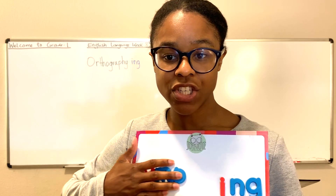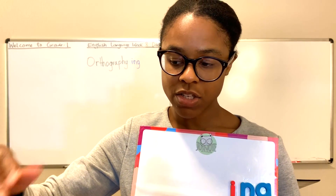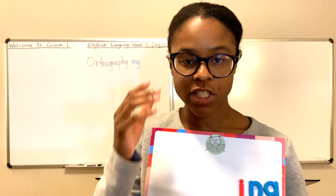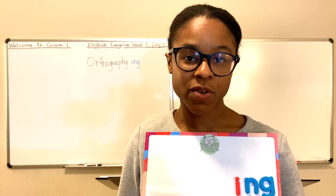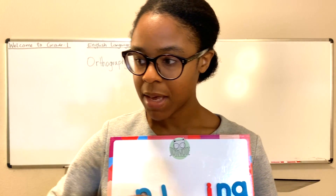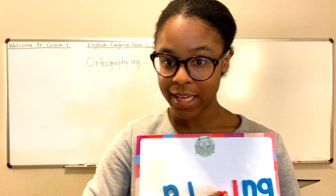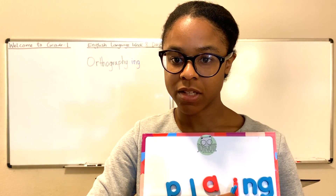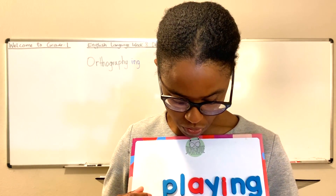Now that we know -ing is going to be added, let's continue with different verbs. If we're not jumping, what else are we doing? Playing. How do you spell play? P-L, and then A-Y come together to make the long A sound. So there you have P-L-A-Y, add I-N-G: P-L-A-Y-I-N-G. I'm playing. What are you doing? I'm playing.